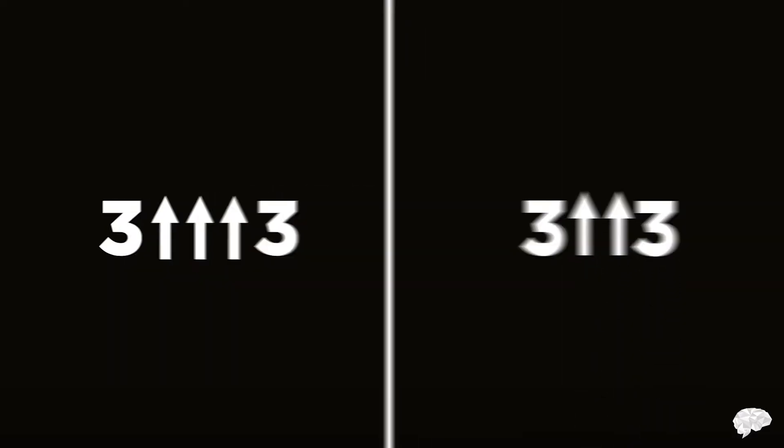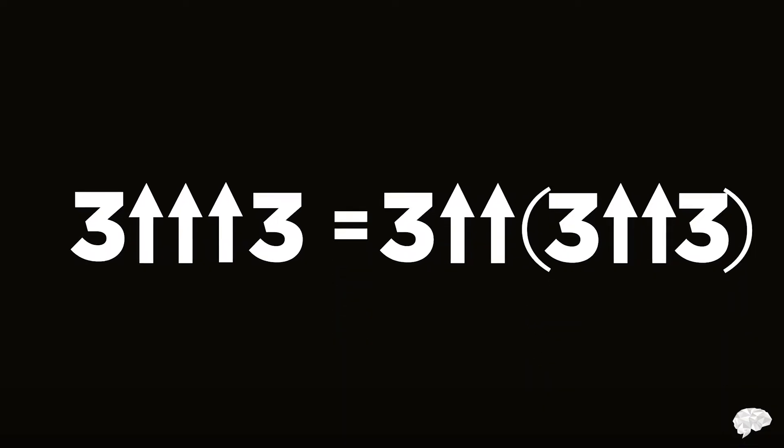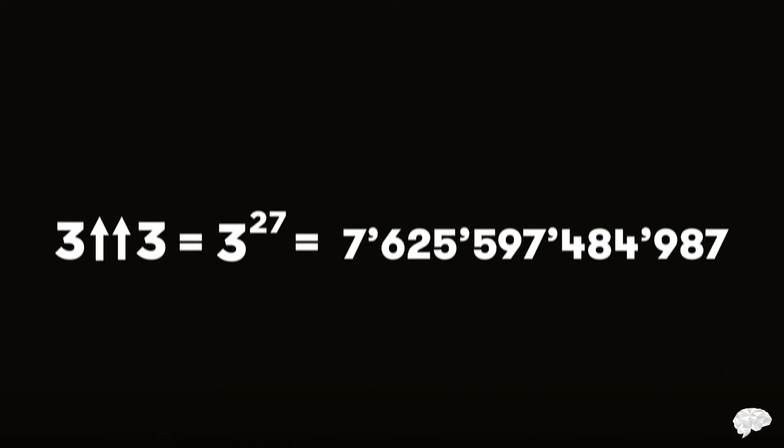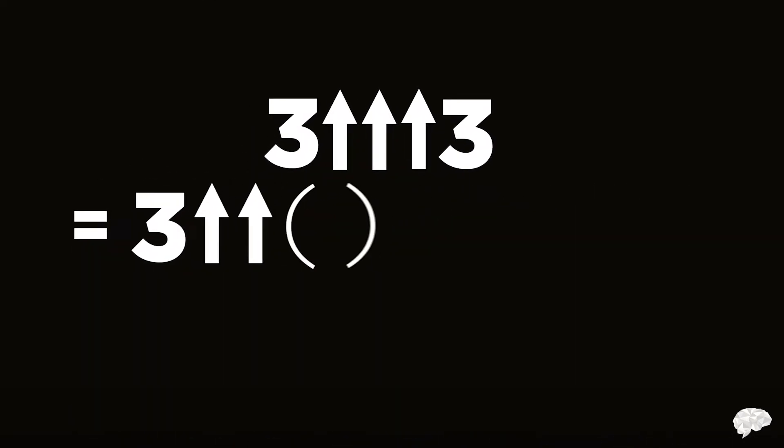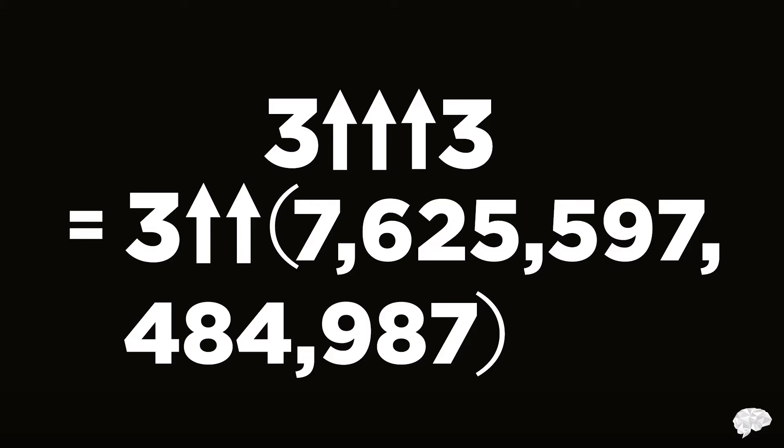Adding another arrow is where this notation first gets difficult to grasp, so please take it slow. Adding a third arrow, we follow this pattern: 3↑↑↑3 equals 3↑↑3 double-arrowed with 3. But remember that 3↑↑3 was over 7 trillion. So 3↑↑↑3 equals 3 double-arrowed this massive number — a tower of 3 to the power of 3 to the power of 3 to the power of... and that tower of powers is over 7 trillion 3s high.